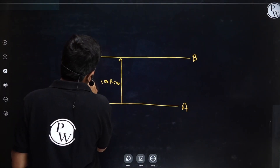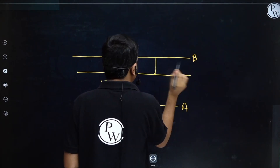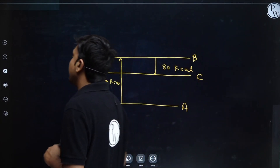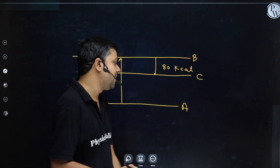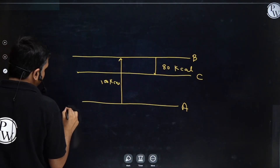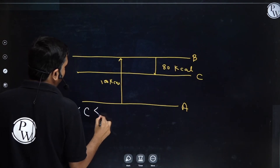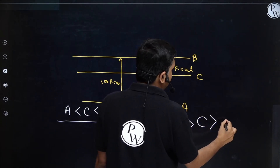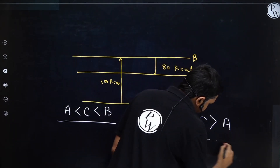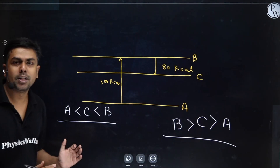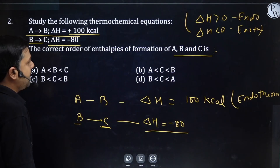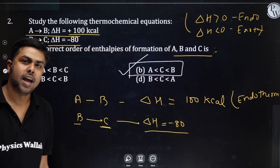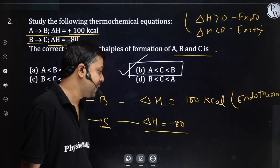Since B converts to C and 80 kcal is released, C has less energy than B. Comparing all three: A is minimum, then C is 20 kcal above A, and B is maximum. The correct order is B > C > A. Looking at the options, option B matches this order. Option B is the right answer.